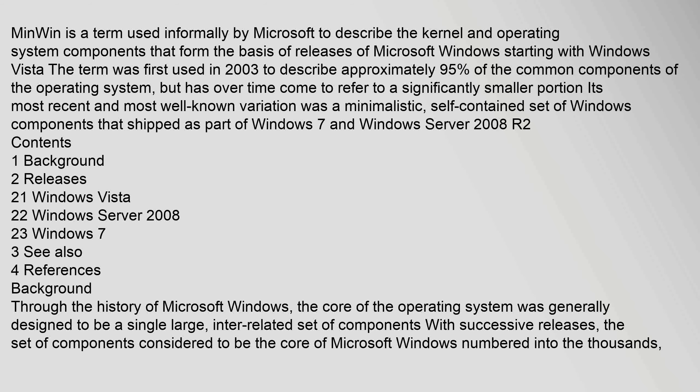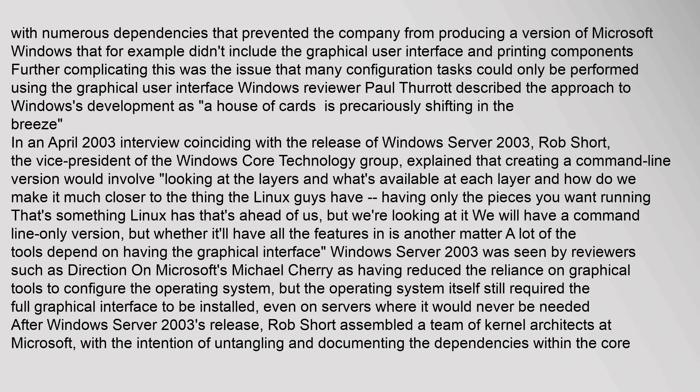Through the history of Microsoft Windows, the core of the operating system was generally designed to be a single large, inter-related set of components. With successive releases, the set of components considered to be the core of Microsoft Windows numbered into the thousands, with numerous dependencies that prevented the company from producing a version that, for example, didn't include the graphical user interface and printing components. Windows reviewer Paul Thurott described the approach to Windows's development as a house of cards, precariously shifting in the breeze.